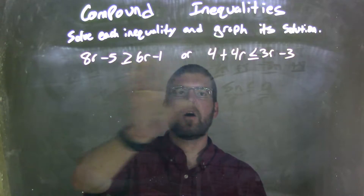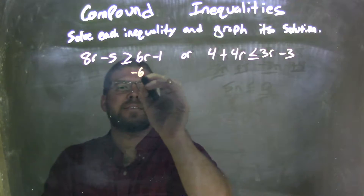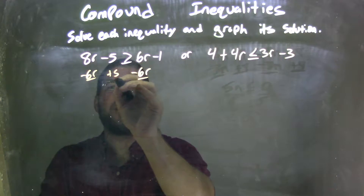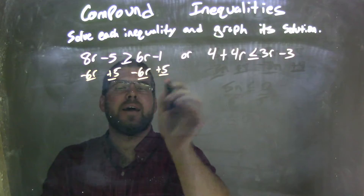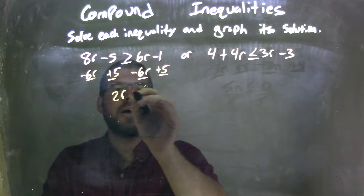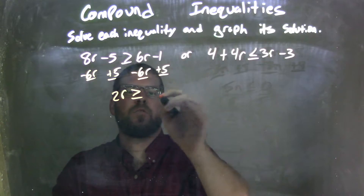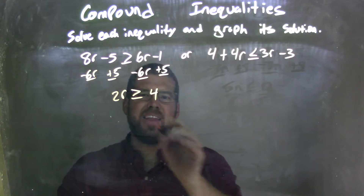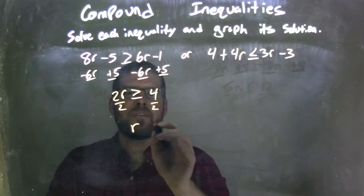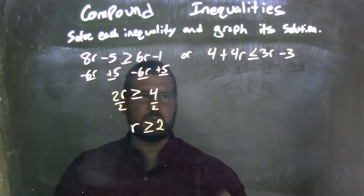My first step is I'm going to solve each individually. So I'm going to subtract 6r from both sides and add 5 to both sides. In doing so, 8r minus 6r is 2r, and that's greater than or equal to negative 1 plus 5, which is positive 4. Then I divide by 2 on both sides, giving me r by itself is greater than or equal to 4 divided by 2, which is 2.